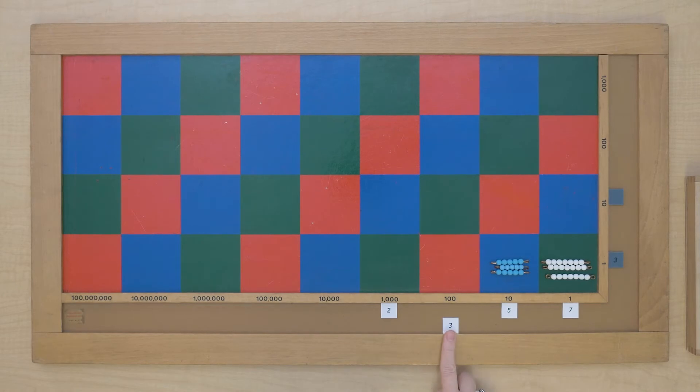And three hundreds three times. One, two, three. Two thousands three times. Okay. So we've multiplied everything in our multiplicand times our units multiplier.